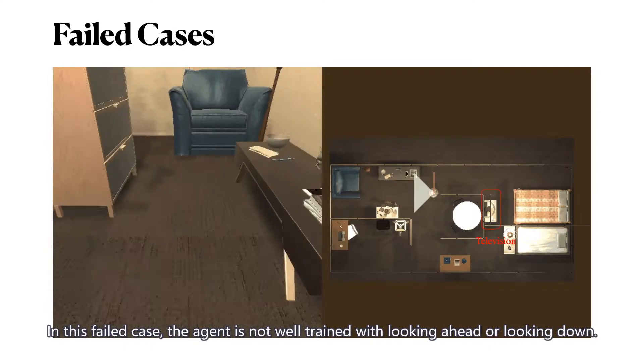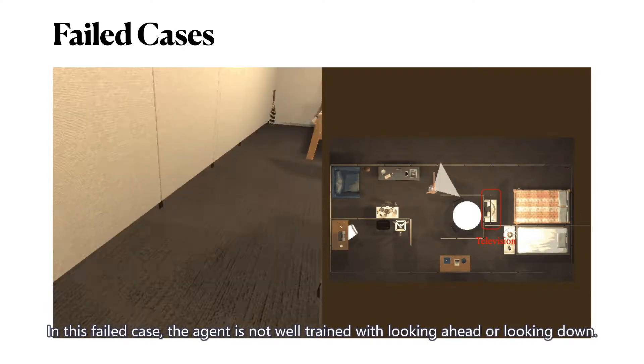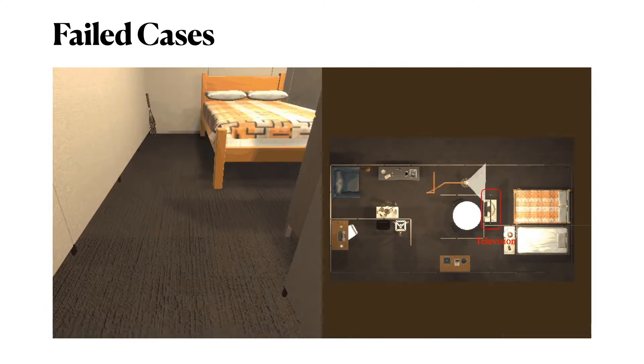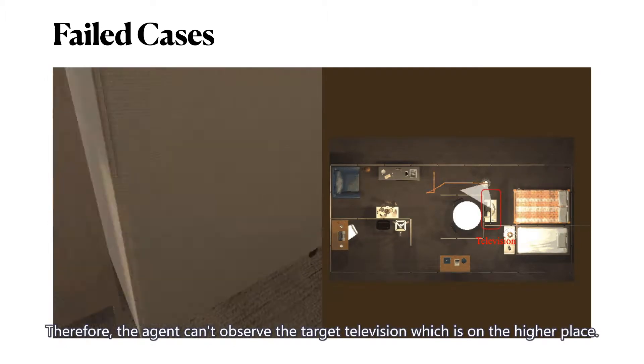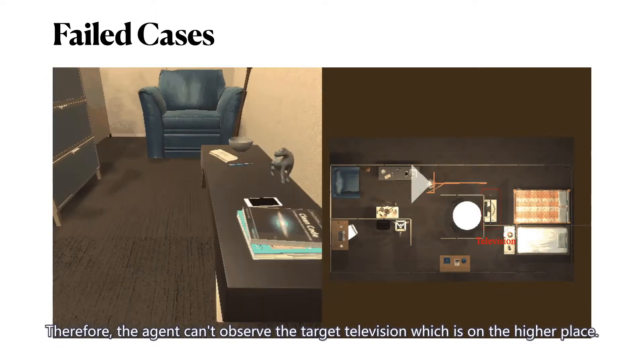In this failed case, the agent is not well trained with looking ahead or looking down. Therefore, the agent can't observe the target, television, which is on the higher place.